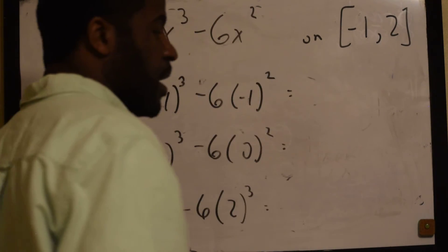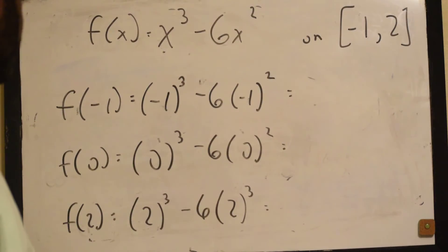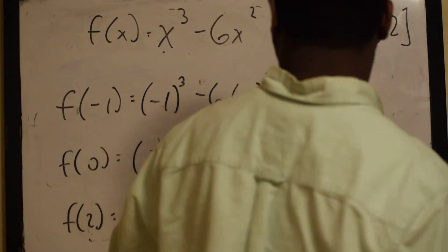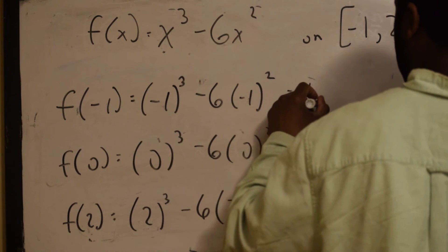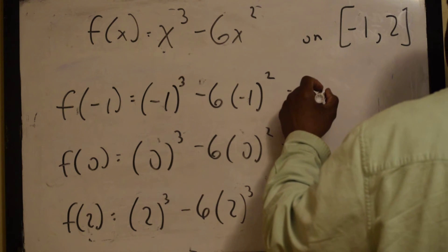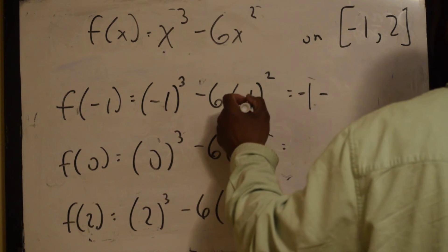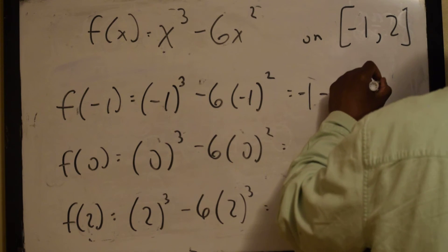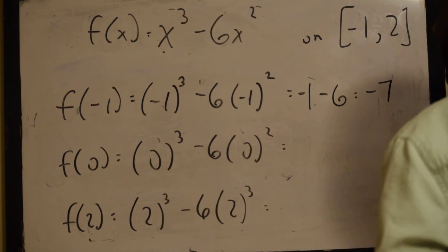Okay? Now, remember, order of operations. Negative 1 cubed, that is negative 1. Minus negative 1 squared, 1 times negative 6. 1 times negative 6 equals negative 7.